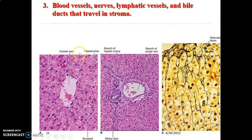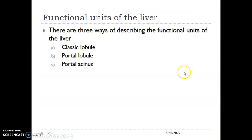The central vein has hepatocytes radiating away from it. At the edges of the hepatic lobule, the portal triad is made up of the portal vein with the largest diameter, the hepatic artery with the thick wall, and branches of the bile ducts, with reticular fibers as the commonest connective tissue. There are three functional units of the liver: the classic lobule, the portal lobule, and the portal acinus.